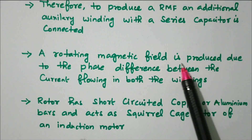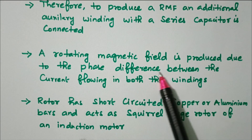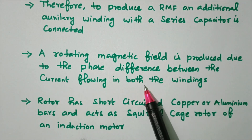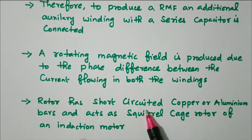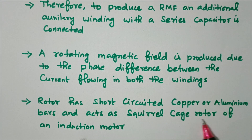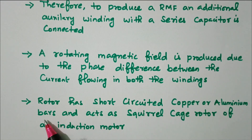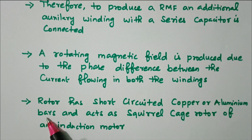A rotating magnetic field is produced due to the phase difference between the currents flowing through both windings. The rotor has short-circuited copper or aluminum bars and acts like a squirrel-cage induction motor rotor. In the rotor, the copper or aluminum bars are permanently present and not wound coils — so it acts as a squirrel-cage induction motor.